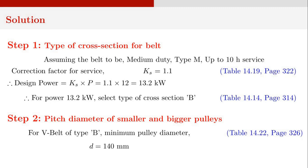First, we find out the type of cross section of this V-Belt. Assuming the belt to be of medium duty type M and up to 10 hours of service, we take the correction factor for service KS as 1.1, obtained from table 14.19 on page 322. The design power is KS multiplied by P, that is 1.1 times 12, giving 13.2 kilowatts. For 13.2 kilowatts, we select the cross section as B from table 14.14 on page 314.